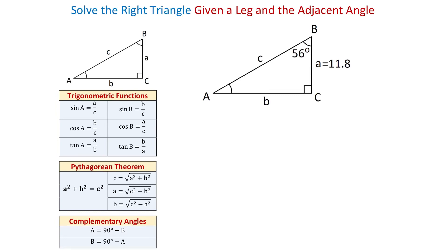In this video we will solve a right triangle given a leg and the adjacent angle. We are given side A that measures 11.8 units and the adjacent angle B that measures 56 degrees. We will find angle A, side B, and the hypotenuse C.